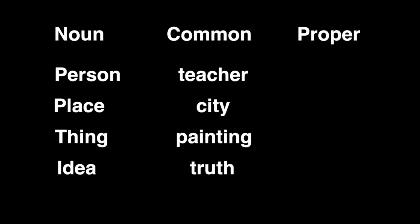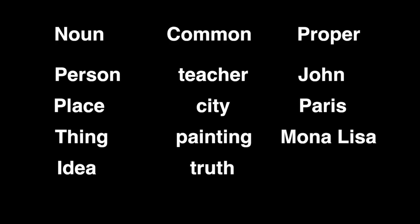Proper nouns do name a particular person, place, or thing and always begin with a capital letter. For example, John is a particular teacher, Paris is a particular city, and the Mona Lisa is a particular painting. Nouns that express ideas are common and not proper nouns.